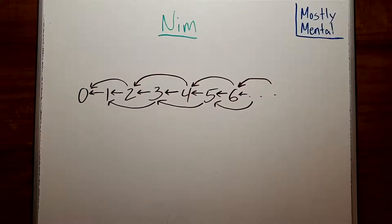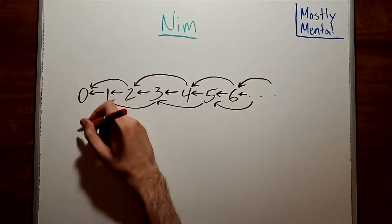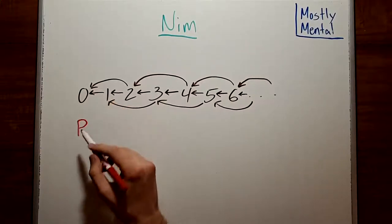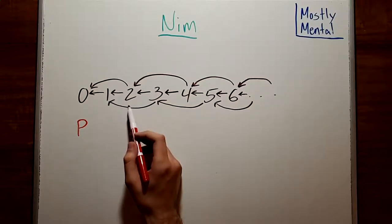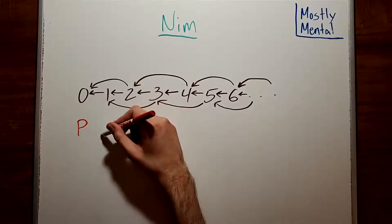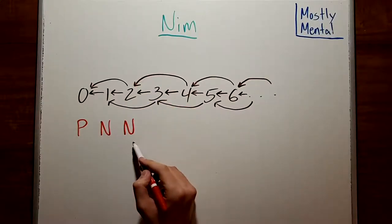So which positions can we win from, and what strategy should we use? Well, if there are no counters, the other player took them all and won on the last turn. We'll call that a P position, since the previous player won. And if there are one or two, we can take them all and win immediately. We'll call those N positions, since the next player to move wins.